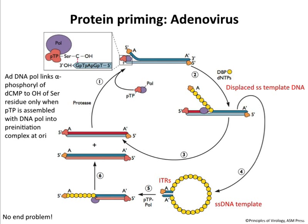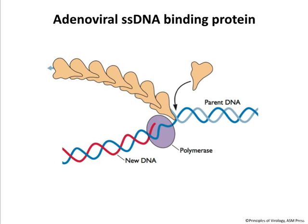The terminal protein is brought in the particle, but PTP and the viral polymerase must be synthesized after the DNA enters the nucleus and is transcribed. There is no end problem here — it's solved by priming right at the end with the protein, so the polymerase recognizes the end without needing an RNA primer. This is another way to solve the end problem: start right at the end.